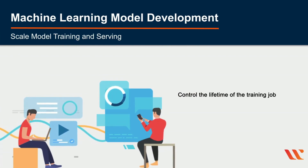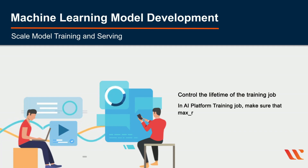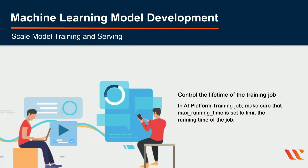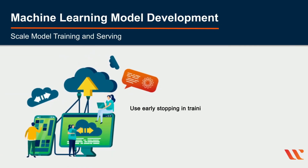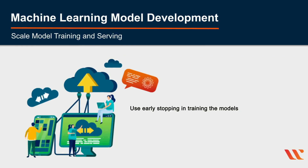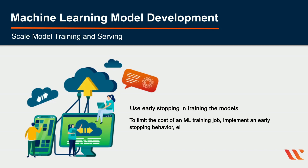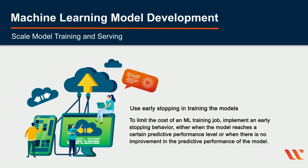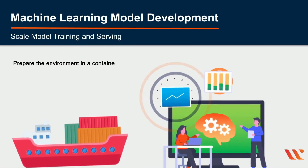Control the lifetime of the training job in AI Platform Training. Set the max running time to limit the job duration — if the training job is still running after that duration, AI Platform Training will cancel it to avoid incurring costs. Use early stopping to limit the cost of an ML training job: implement early stopping either when the model reaches a certain predictive performance level or when there is no improvement in predictive performance.